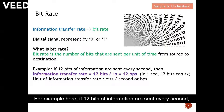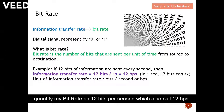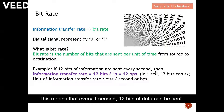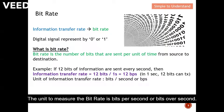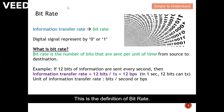For example, if 12 bits of information are sent every second, we can quantify the bit rate as 12 bits per second — also written as 12 bps, where bps stands for bits per second. This means that every one second, 12 bits of data can be sent. The unit to measure bit rate is bits per second.